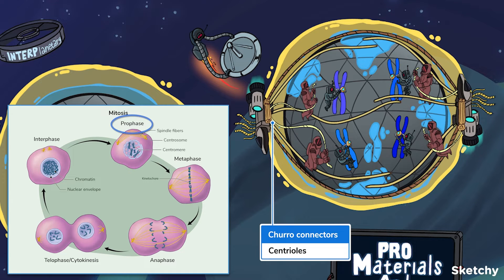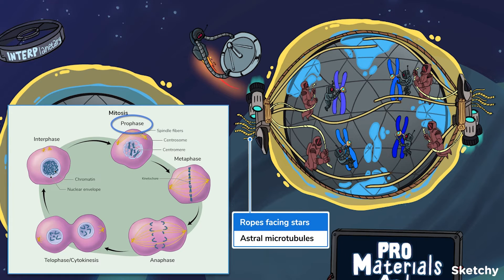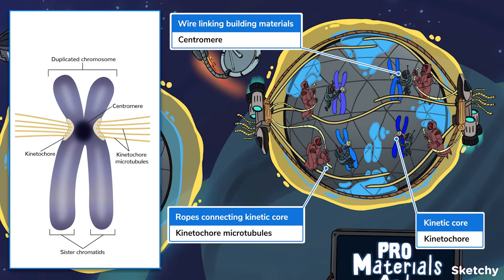spindle fibers extend from the centrioles and help assemble the spindle apparatus. There are three kinds of spindle fibers, or microtubules. Polar microtubules extend from the centrosomes and overlap each other at the center. They help move the spindle apparatus apart during mitosis. Astral microtubules extend from the centrosomes to the cell membrane. To remember astral microtubules, we drew these ropes facing the stars.